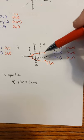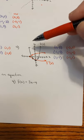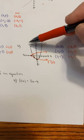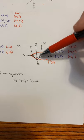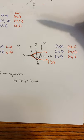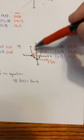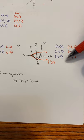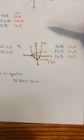So when you're given a picture of a graph, just find some points. If it's a line, all you need is 2. If it's not a line, you need 3. And 3 worked — that was enough.